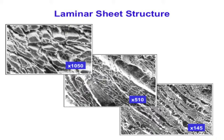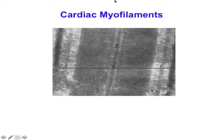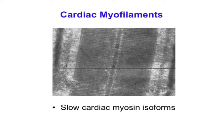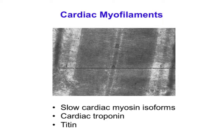As you go from region to region, the mean orientation of the sheets changes just as the mean fiber orientation changes. A cardiac sarcomere looks very much like a skeletal sarcomere with I-band, A-band, M-line, and Z-disc. The myosin isoforms tend to be the slow isoforms because cardiac muscle is slow twitch. The troponin isoforms differ, and the titin isoforms are shorter and therefore stiffer, making cardiac muscle cells stiffer at rest than skeletal muscle.